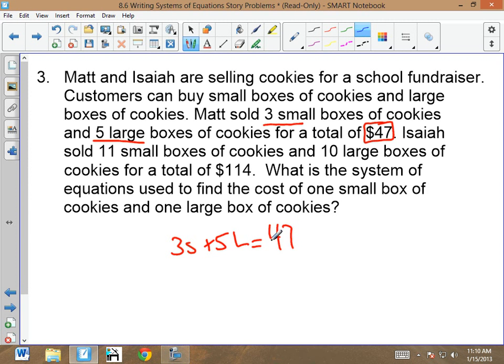So 47 equals three small plus five large. Okay, now notice how I didn't put a dollar sign on the total. Don't put a dollar sign in your systems. Now, Isaiah sells 11 small plus 10 large. And how much money did he collect? 114, okay?